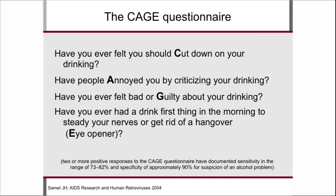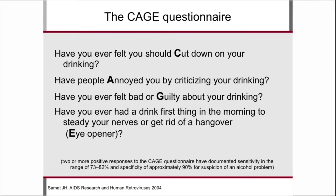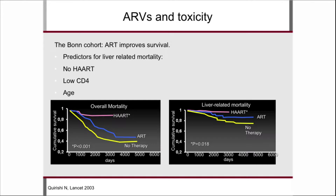The CAGE questionnaire — C-A-G-E — has been validated in HIV infection and is designed to help the primary care physician rule out a potential alcohol problem. It has just four questions: Have you ever felt you should cut down your drinking? Have people annoyed you by criticizing your drinking? Have you ever felt bad or guilty about your drinking? Have you ever had a drink first thing in the morning to steady your nerves? If you have two or more positive answers, you're at high risk of having an alcohol problem — a useful tool in clinical practice.